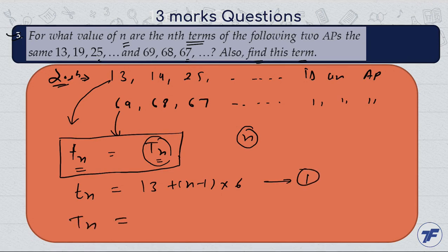The general term of the second AP: 69 as the first term plus (n-1) into the common difference -1. This is equation 2.